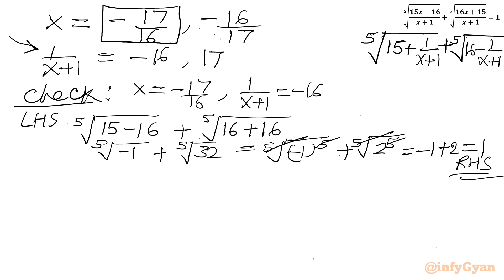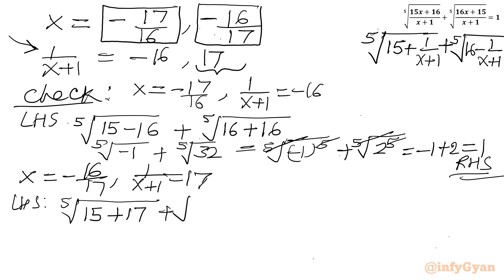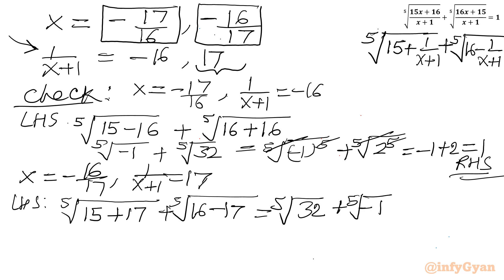Verification for x = −16/17: LHS = 5th root of (15 + 17) + 5th root of (16 − 17) = 5th root of 32 + 5th root of (−1) = 2 + (−1) = 1. Same result — matches RHS. Both solutions are confirmed valid.